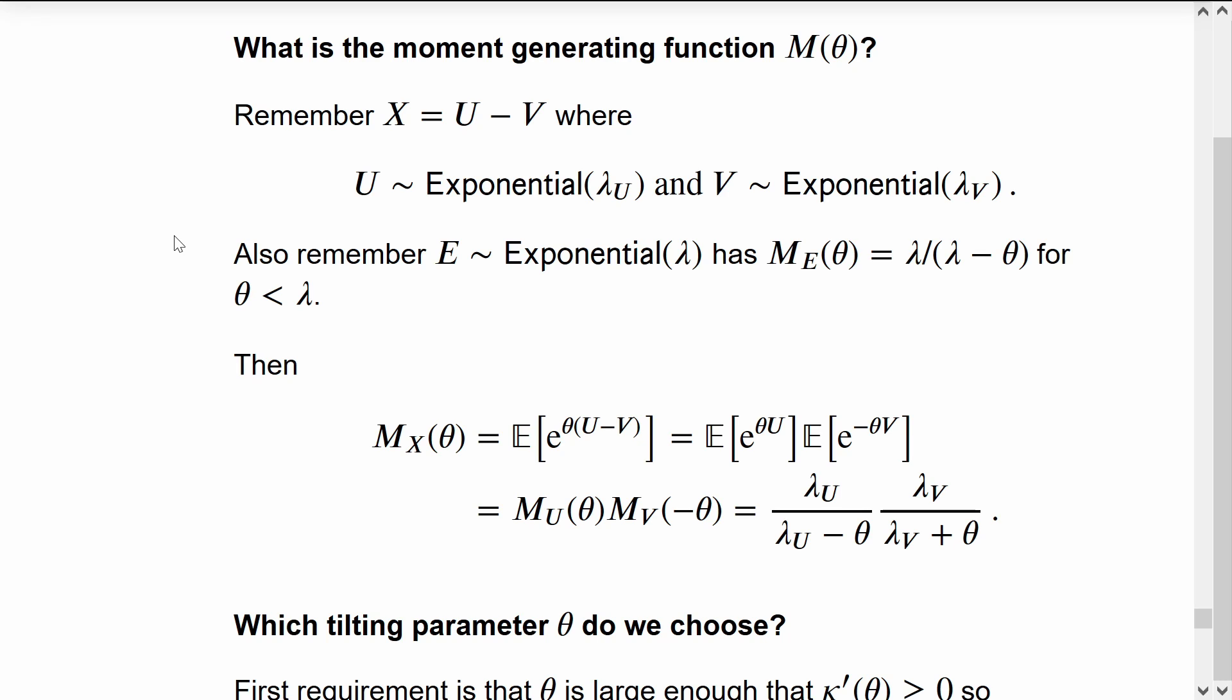Doing some algebra, we can see that the moment generating function of the difference is the moment generating function of U evaluated at theta multiplied by the moment generating function of V evaluated at minus theta. And we get the particularly simple form on the bottom right.